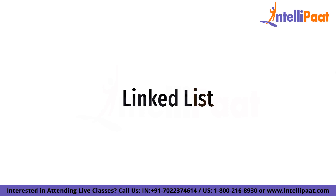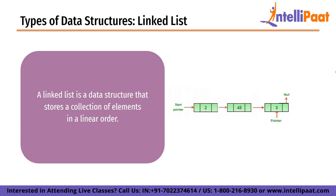A linked list is a data structure that stores a collection of elements in a linear order. Unlike an array, which stores elements in contiguous memory, a linked list stores each element in a separate node. Each node contains both the element and a reference to the next node in the list. The main advantage is efficient insertion and removal of elements at any position. However, accessing an element at a specific position requires traversing the list from the beginning, giving O(n) time complexity on average.